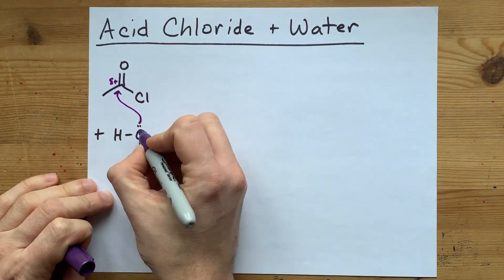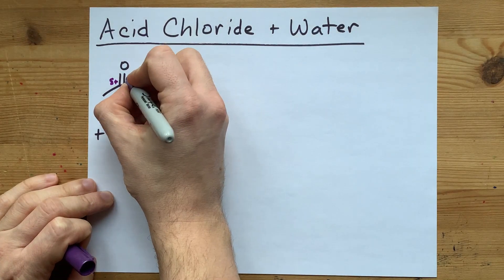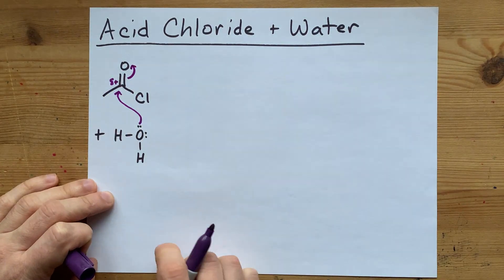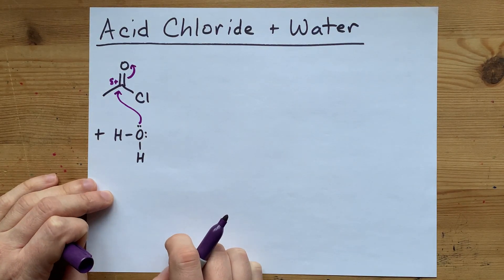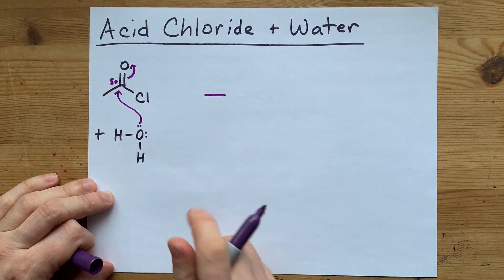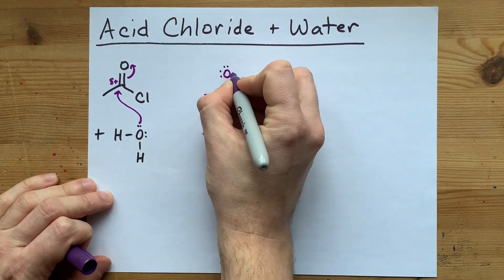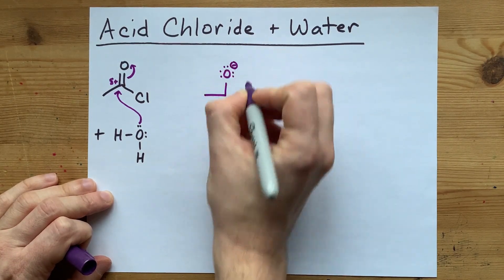After that attack, the lone pair of the oxygen forms a single bond in there and the double bond between the oxygen breaks. You end up with that carbon still connected to whatever carbon chain was to the left here, single bonded to this oxygen, which now has a minus charge on it.